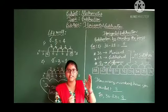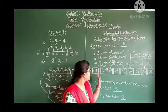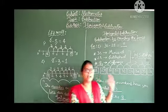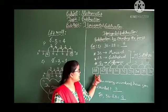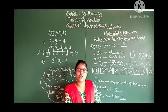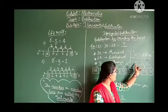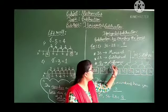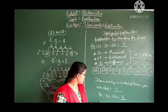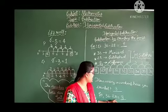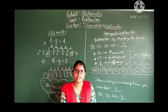To recap: 36 minus 28 — first, count backwardly from 36 to 28: 1, 2, 3, 4, 5, 6, 7, 8. You have counted 8 steps. So, 36 minus 28 is equal to 8, and therefore 8 is called the difference.